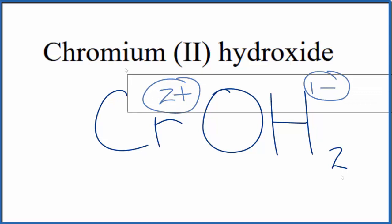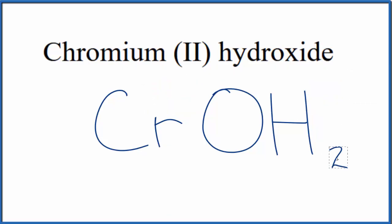Get rid of these symbols here. And then because we have two of these hydroxide ions, we do need to put parentheses around it just to show that we have two separate hydroxide ions there.